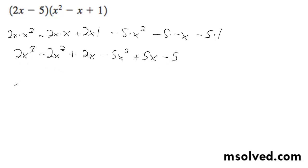So combining terms, the 2x cubed stays the same, and we have minus 2x squared and minus 5x squared, which gives us minus 7x squared,